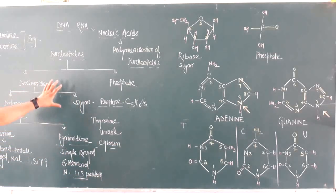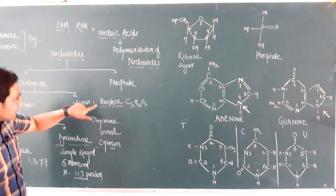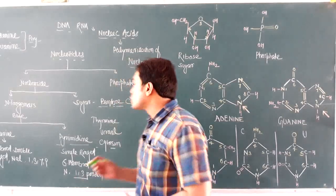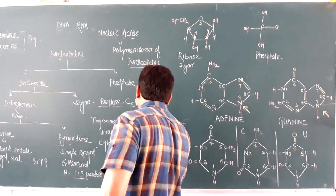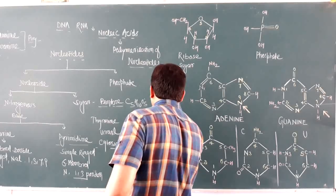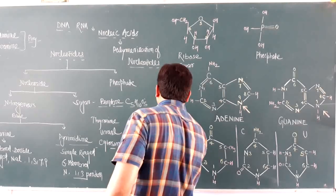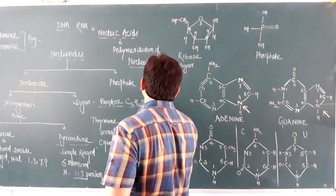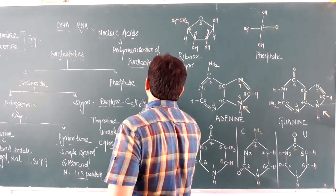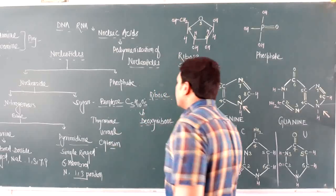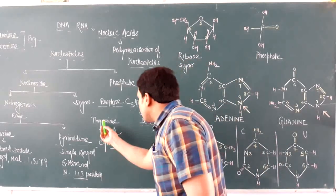When talking about DNA, the sugar is in the form of a pentose, and in the case of DNA the sugar will be deoxyribose. In the case of RNA, the sugar will be ribose.